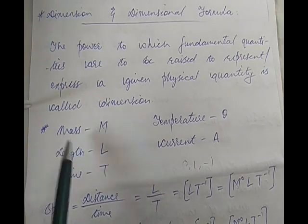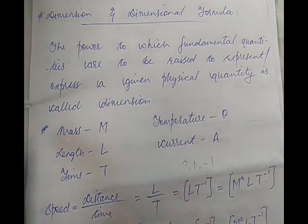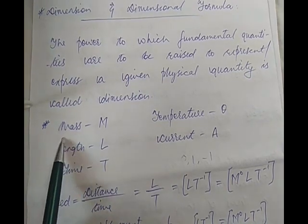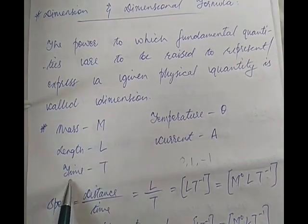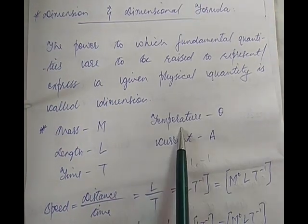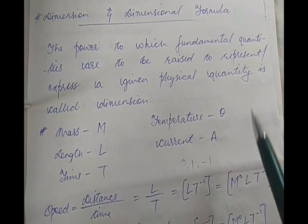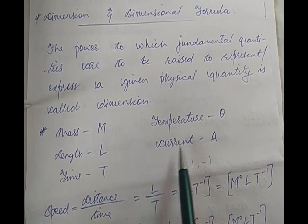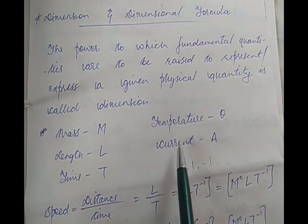Let me show you our fundamental quantities: mass, length, time, temperature, current — these are the five basic fundamental quantities we very often encounter. Instead of mass we write capital M, instead of length capital L, time is denoted by capital T, temperature is denoted by theta since T already denotes time, and A denotes current — A comes from ampere.